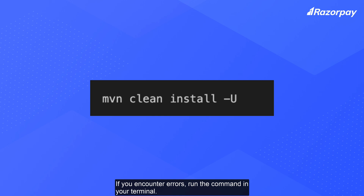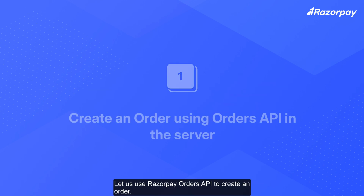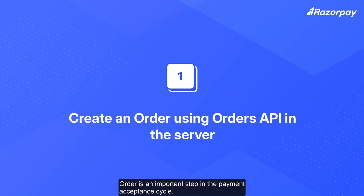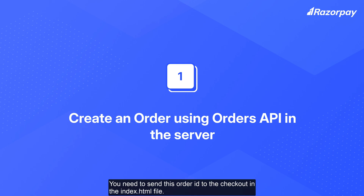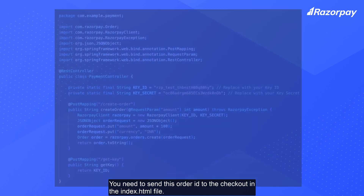If you encounter errors, run the command in your terminal. Let us use Razorpay Orders API to create an order. Order is an important step in the payment acceptance cycle. Once an order is created in the server, i.e., the paymentcontroller.java file, an order ID is generated in the response. You need to send this order ID to the checkout in the index.html file.